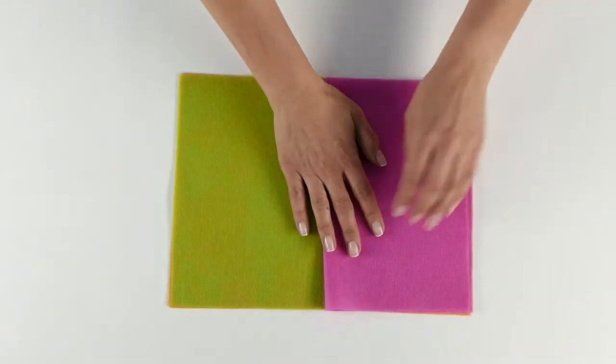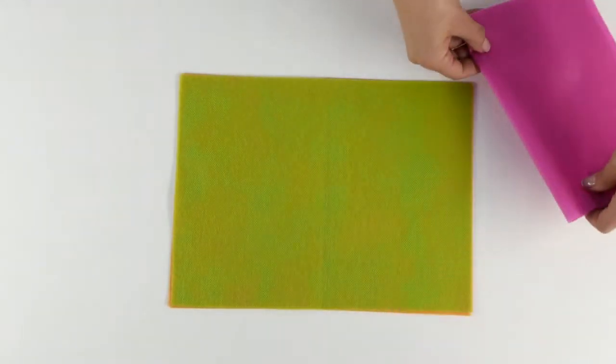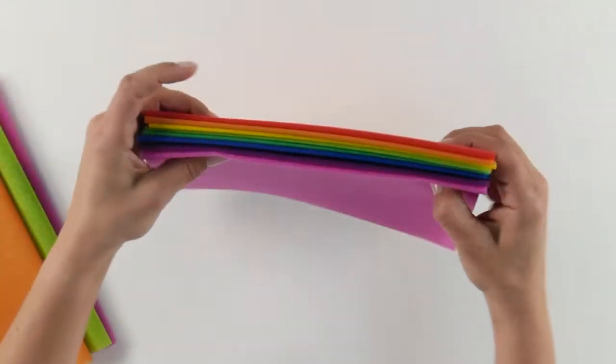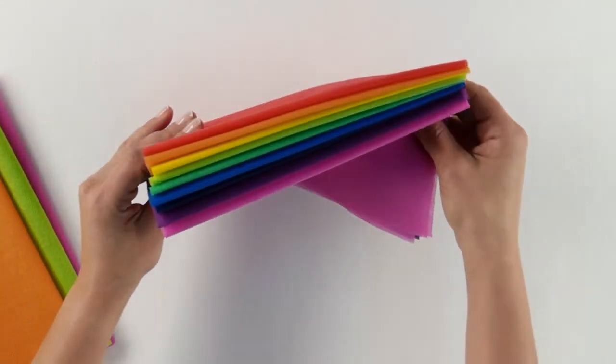Folding. SmartFab is really easy to crease and fold, and it holds its shape. All you have to do is crease it firmly, and the fold will stay in place.